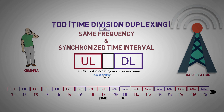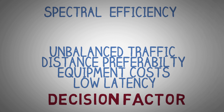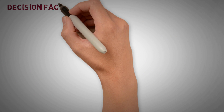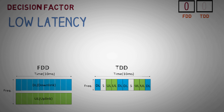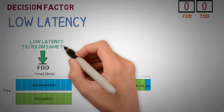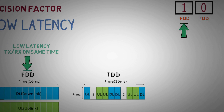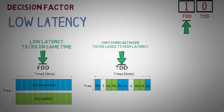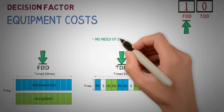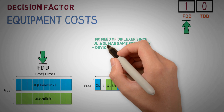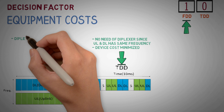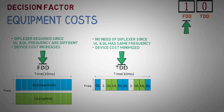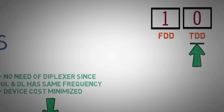Let us see what factors help an operator decide whether to use FDD or TDD before rolling out a network. Low latency: FDD offers very low latency since transmit and receive functions operate simultaneously and continuously, whereas in TDD the switch from transmit to receive incurs a delay, causing traditional TDD systems to have greater inherent latency. Equipment costs: no duplexer is needed to isolate the transmitter and receiver in TDD, whereas in FDD a duplexer is needed. Since the cost of user equipment is of major importance due to the vast numbers produced, TDD has the advantage here.